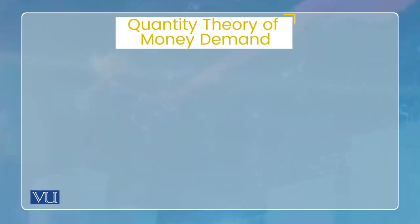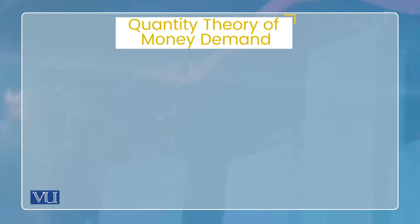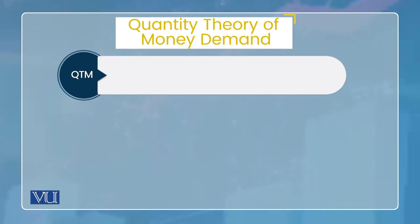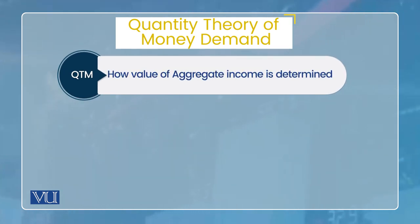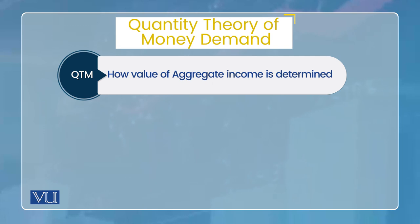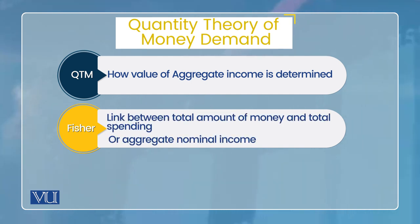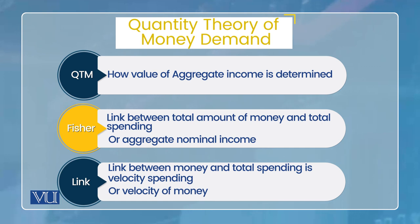سب سے پہلی theory — یہ بھی evolution ہے، یعنی ہم پرانے زمانے سے نئے زمانے کی طرف آئیں گے۔ جو یہ پرانی theory ہے یہ 20th century کے آغاز کی quantity theory of money demand ہے۔ Basically یہ theory اس چیز سے شروع ہوئی کہ aggregate income یا aggregate spending جسے ہم GDP بھی کہہ سکتے ہیں، وہ کیسے economy میں determine ہوتی ہے۔ Fisher وہ economist تھا جس نے یہ analysis شروع کیا — وہ interested تھا کہ money اور aggregate spending یا aggregate income میں کیا relationship ہو سکتا ہے۔